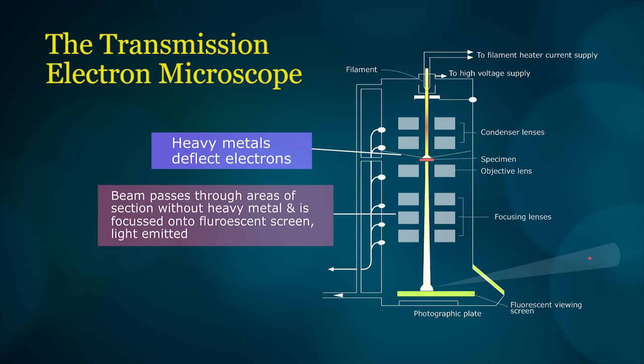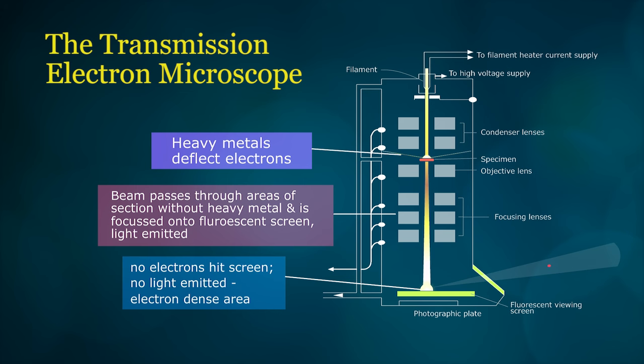Areas in the tissue lacking heavy metals allow electrons to pass through to the fluorescent screen where they activate the emission of visible light. These areas are referred to as being electron light or electron lucent.